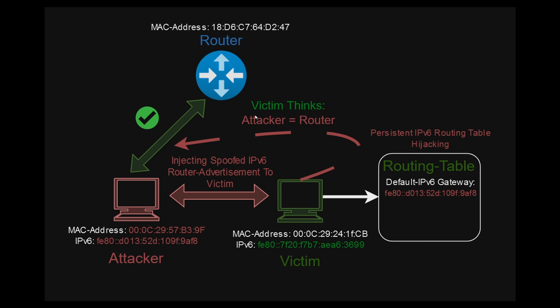This is how the attack works: the attacker machine will send a specific spoofed IPv6 router advertisement to the victim machine, making the victim machine think that the attacker machine is the router in the IPv6 network.